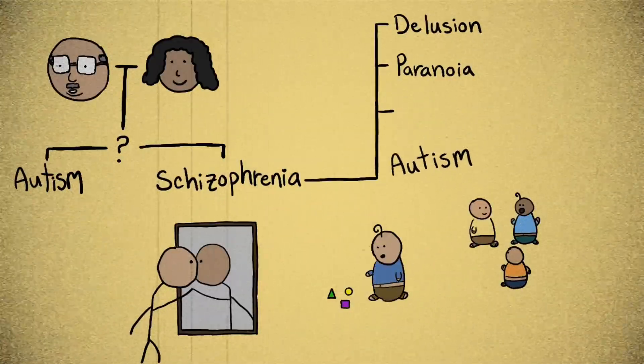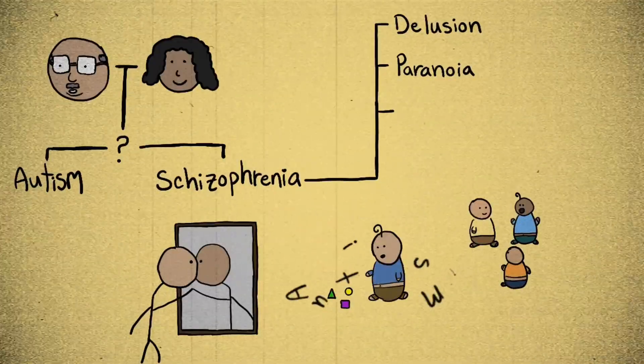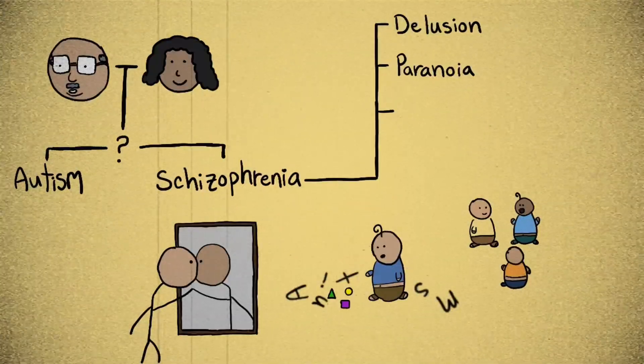Kanner considered autism as having remarkable similarities with schizophrenia. In the words of Kanner, some of these similarities are insularity, a desire for sameness, a deviance from normal pronoun use, difficulty understanding intentions and the viewpoints of others, total lack of interest in people, and an obsession with the inanimate.